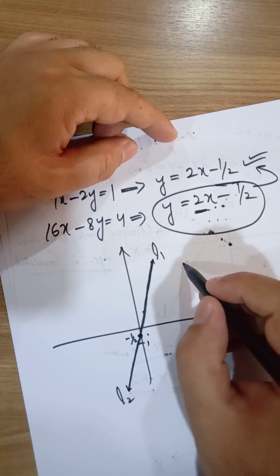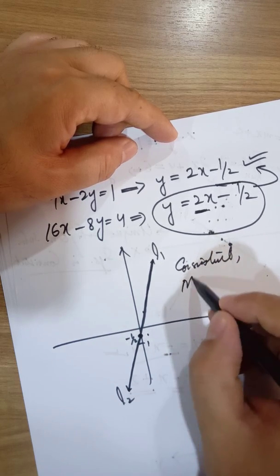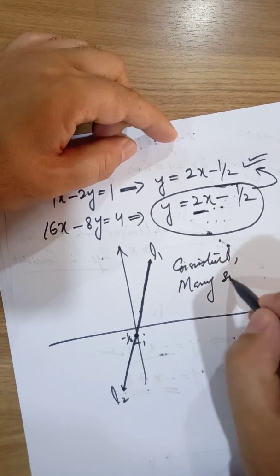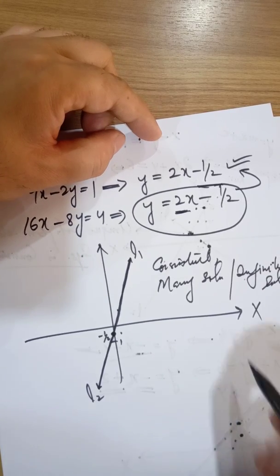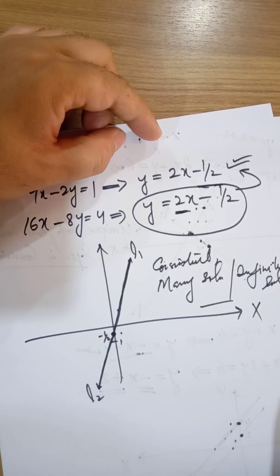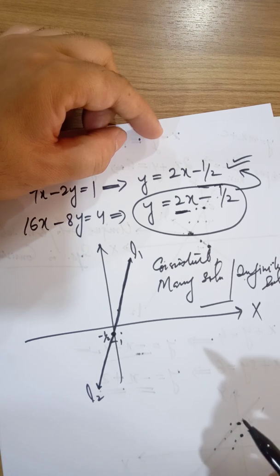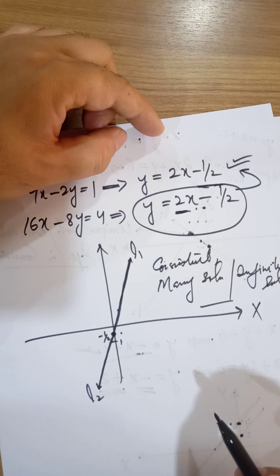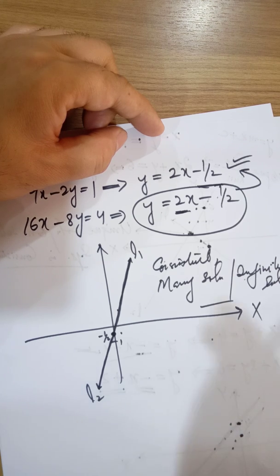Since there are solutions — infinitely many — the system is consistent, but with many solutions or infinite solutions. I hope you are getting these concepts. If you have any problems, please comment or reach out via the WhatsApp group. You can also check the related video for Chapter 1 and 2. Thank you very much.